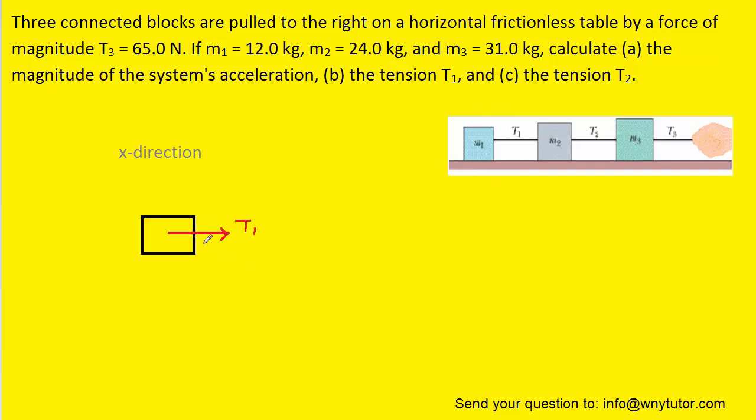In the x direction, the only force acting is T1. We're going to ignore the y direction because there's no acceleration there. We can write out Newton's second law. We'll plug in the net force and the mass. We'll plug in the value of m1, which was given as 12 kilograms, and the acceleration we found as 0.97 meters per second squared.